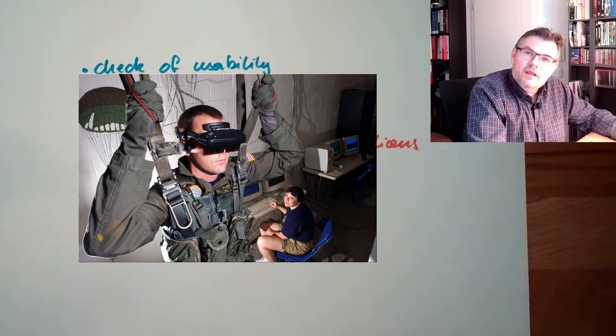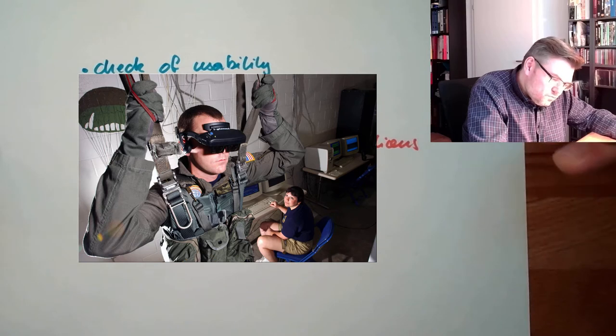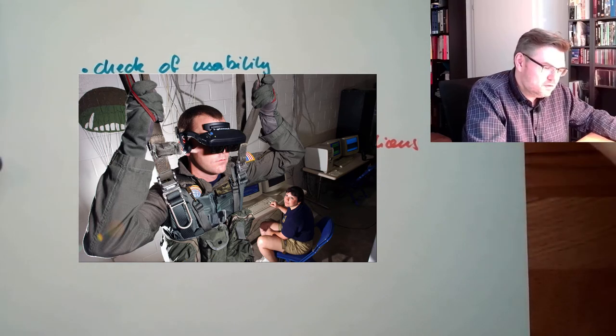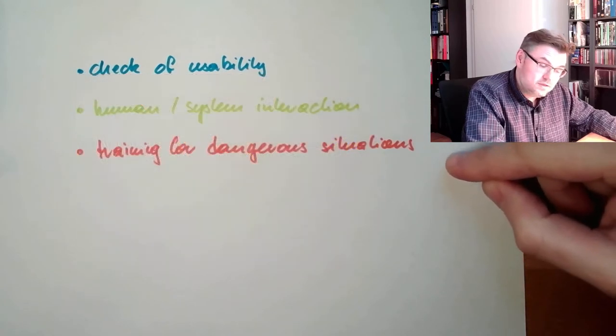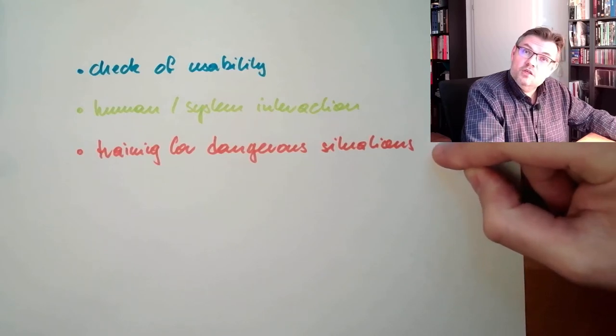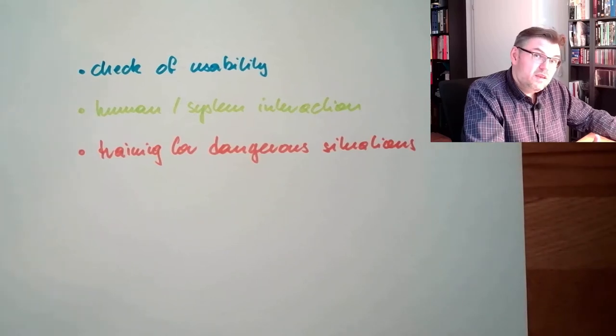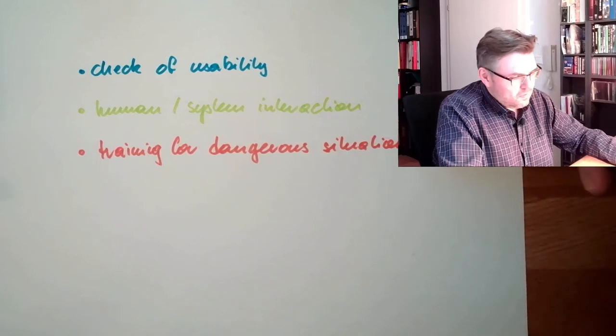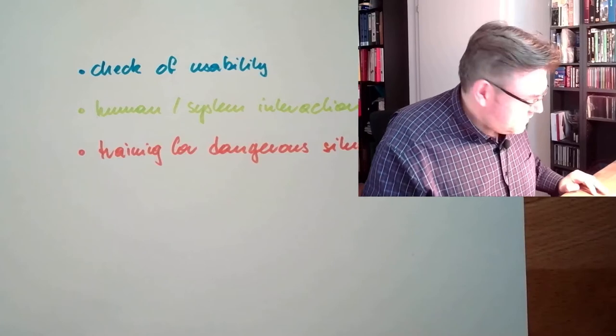This helps to analyze, to prevent dangerous stuff, that the persons do it correctly. There we are again at the requirements. If in reality, then at a real dangerous situation it looks different than in the simulation, you know the neurons are insecure. So there you really have to know what you're doing. Check of usability, human system interaction, training of dangerous situations.